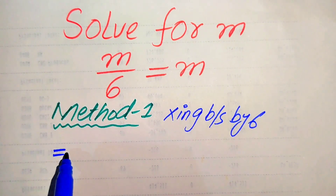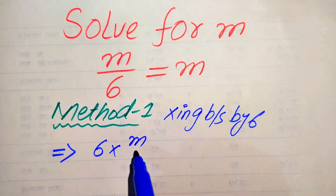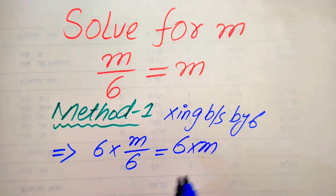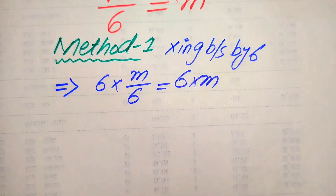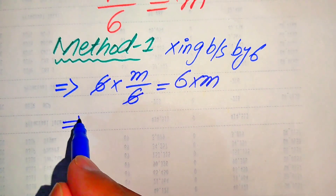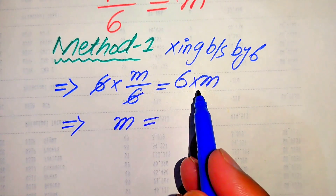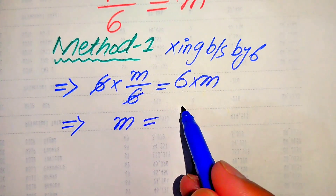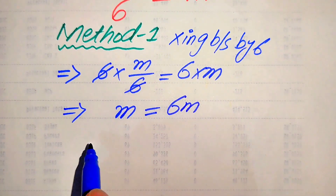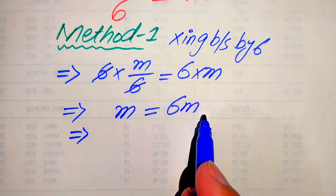When we multiply both sides by 6, this is written as 6 multiplied by m over 6 equals 6 multiplied by m. You see here this 6 and this 6 cancel, and we get m equals 6 times m, which is 6m. Now to find the value of m, we move this m to the right hand side.